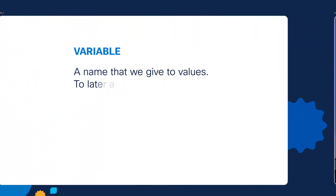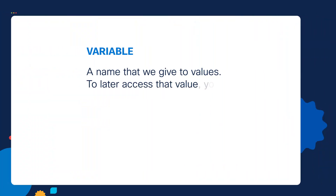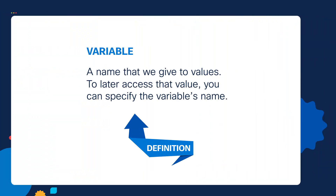Let's go back to our definition, because it's probably going to make a lot more sense now. A variable is a name that we give to values. To later access that value, you can specify the variable's name.